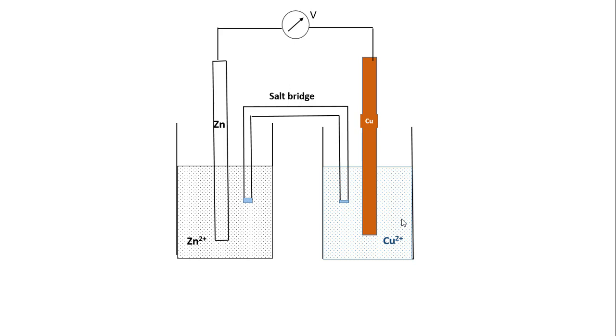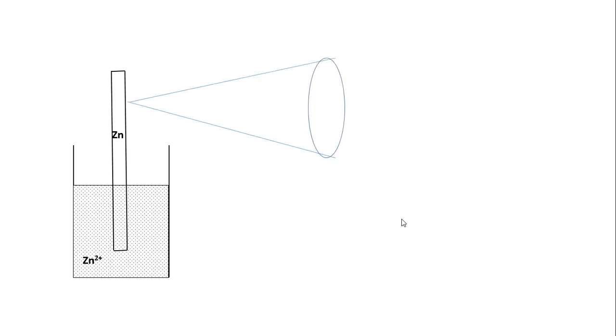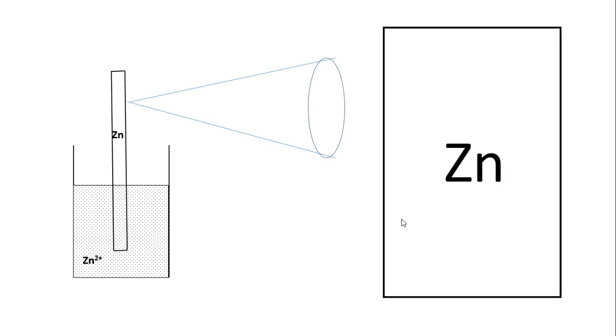To understand the mechanism, we are going to consider the left half — that is, the zinc rod dipped in a Zn²⁺ solution. The zinc rod is a metallic rod. In the metallic rod, if we consider one zinc atom, the zinc atom as such is neutral.